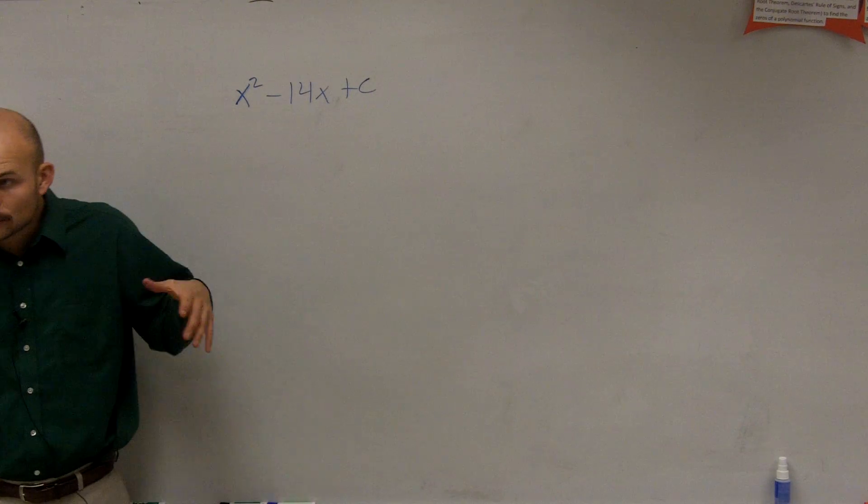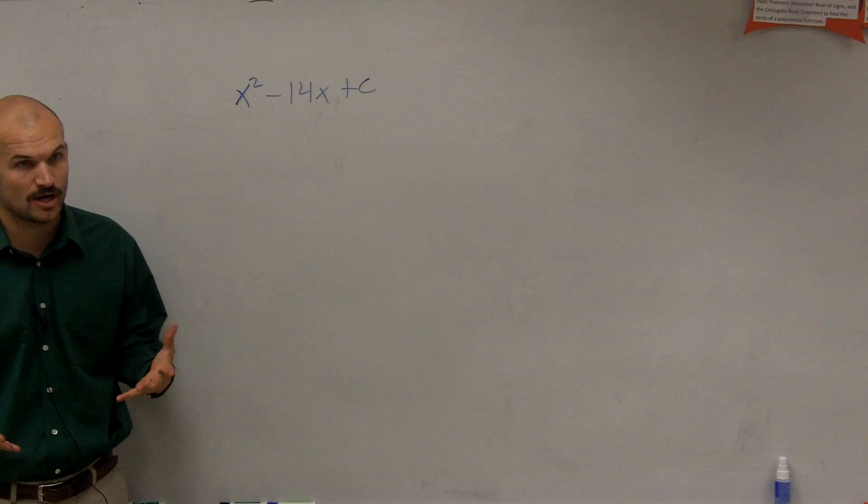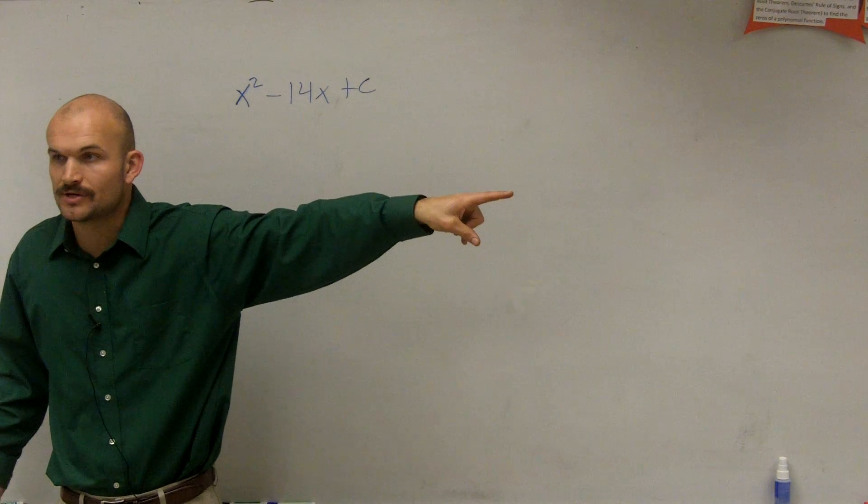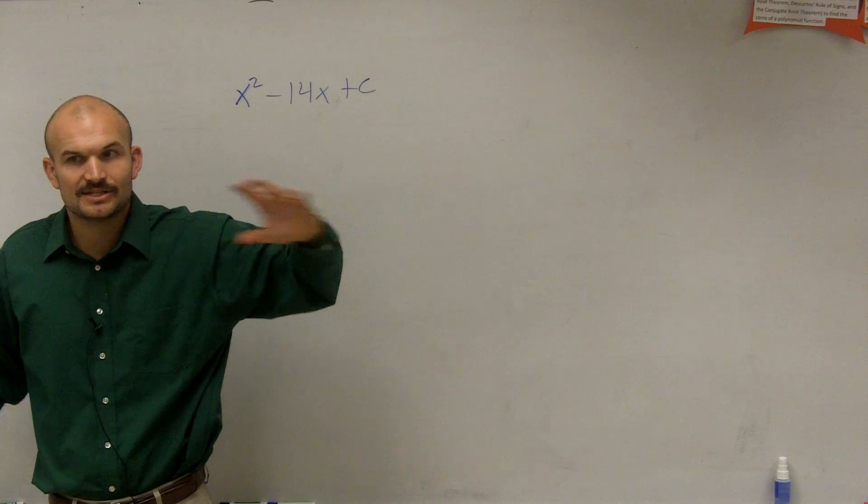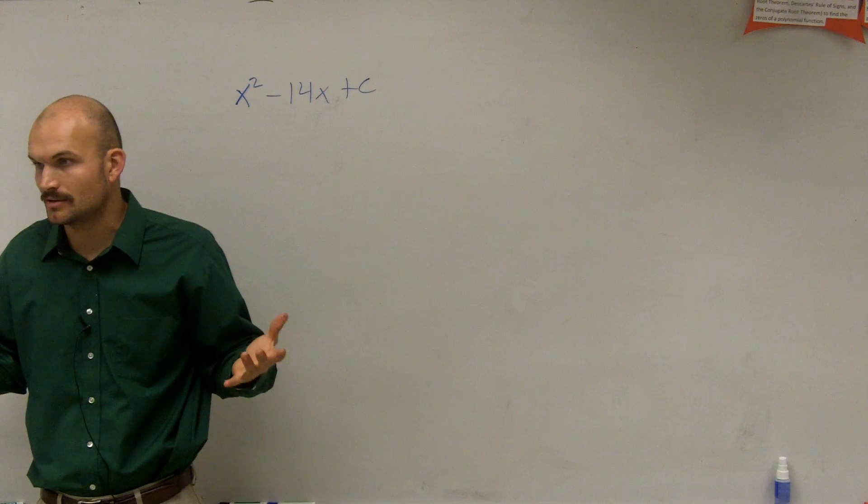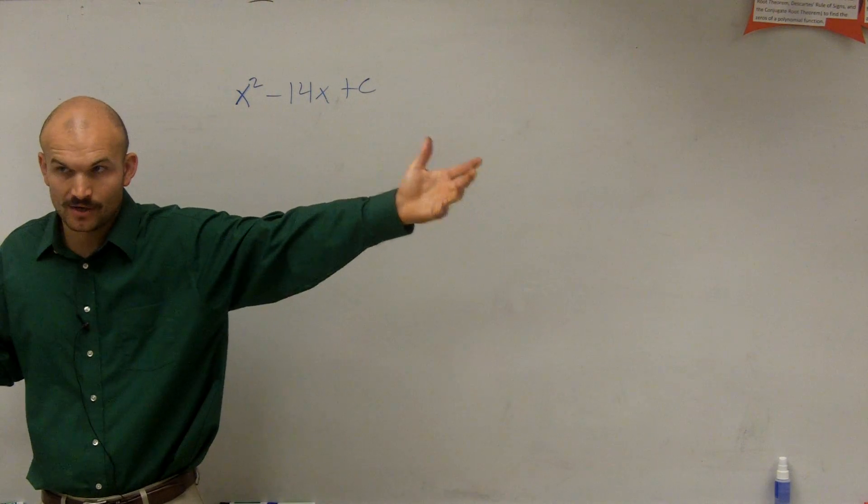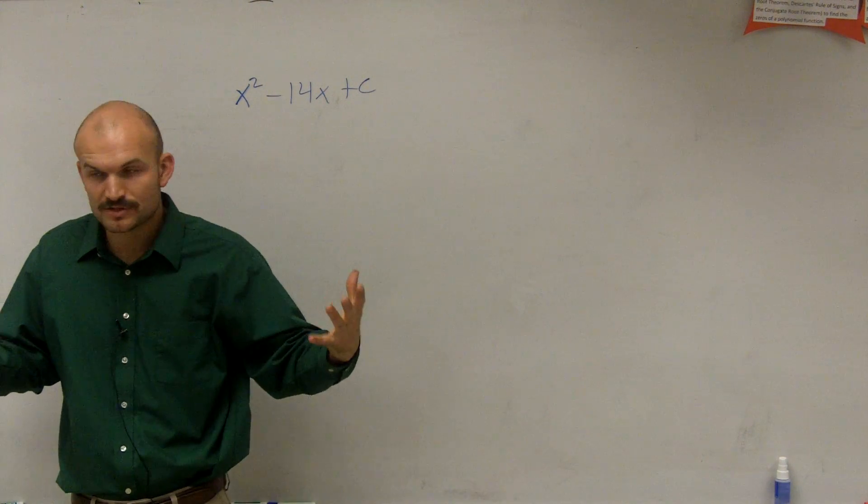What they want us to do is create our perfect square trinomial. Over there, we already had perfect square trinomials, so it was easy to write it as a perfect square. You have a perfect square trinomial, you factor it down to a perfect square.